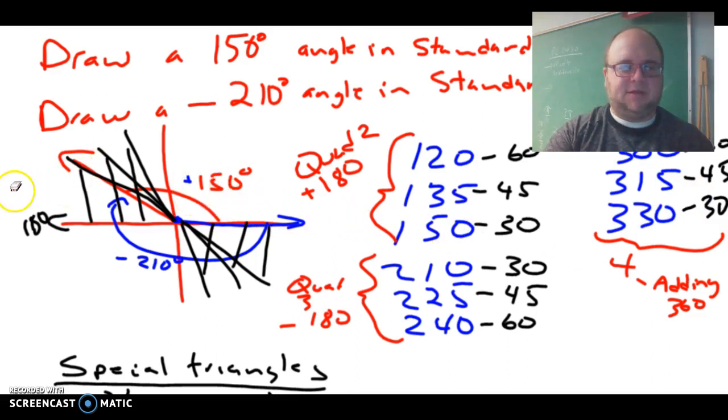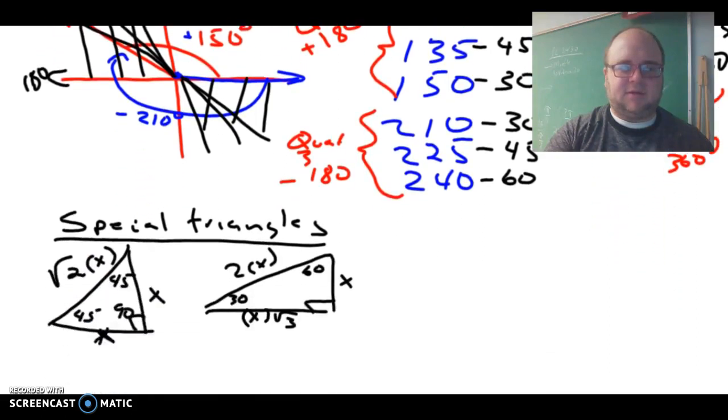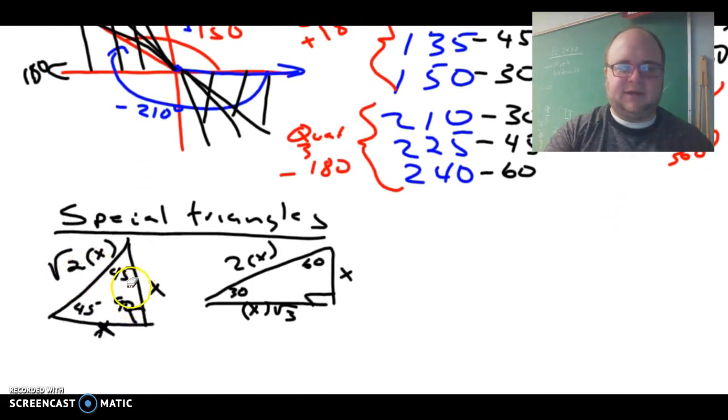Next we looked at some special triangles. The hypotenuse of a 45-45-90 triangle is root 2 times the side length. And on a 30-60-90 triangle, the hypotenuse is double the shorter side, and the other side is root 3 times as big as the shorter side.